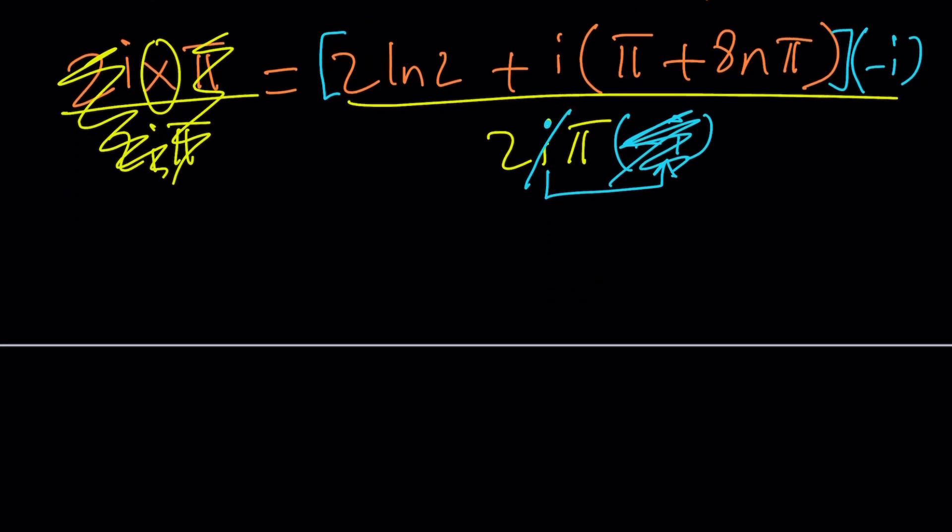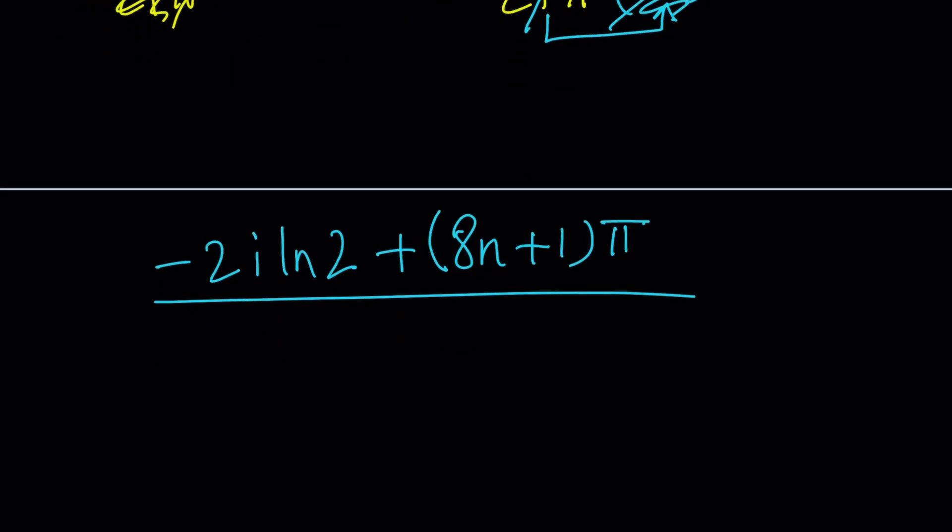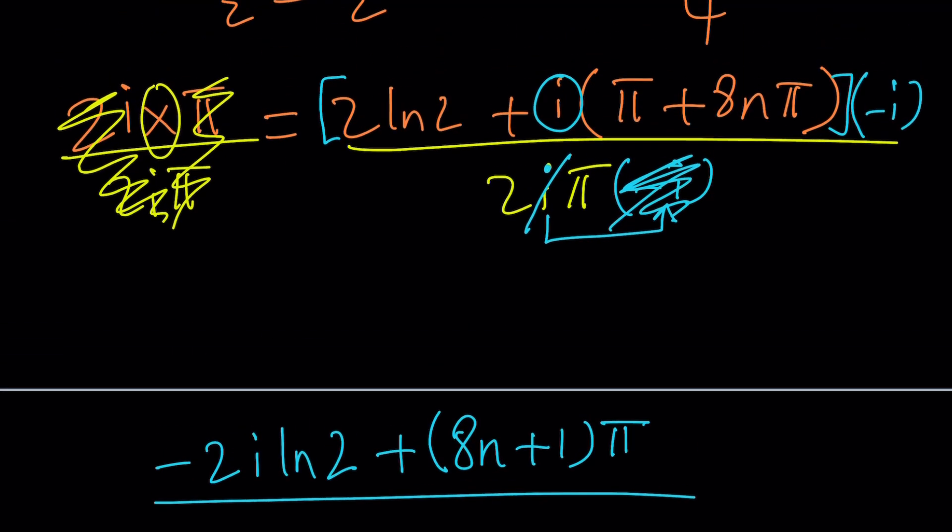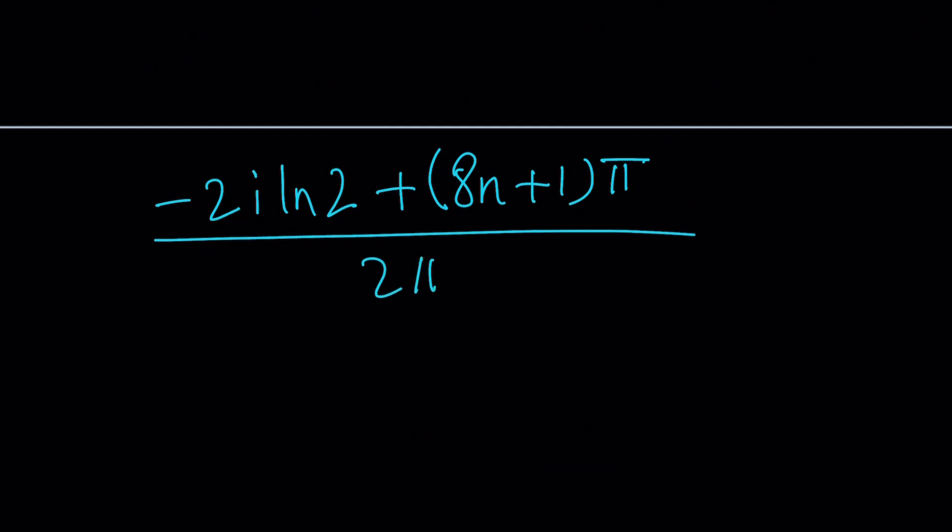And then on top, we're going to have to distribute the negative i. That's going to be negative 2i ln 2. And then when you distribute the i, that's going to be another 1 again because negative i squared. So it's just going to be the sum of these two things, and that's going to be 8n plus 1 multiplied by pi. So we can kind of factor out a pi here. And the whole thing is going to be divided by 2 pi. That's what's left.